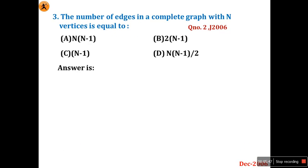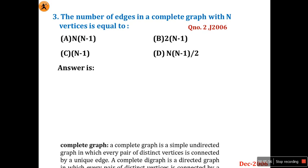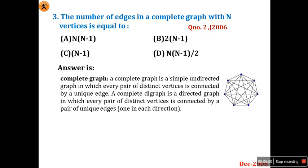Next: the number of edges in the complete graph with N vertices is equivalent to. This I have already explained. If the graph is complete — what is a complete graph? All edges should have a unique one edge from every other vertex. A complete graph is a simple undirected graph in which every pair of distinct vertices is connected by a unique edge. So how many edges if it is a complete graph? Definitely it is N into N minus 1 by 2. I think this graph topology is used in mesh topology. This question was also asked in June 2006, question number 2.